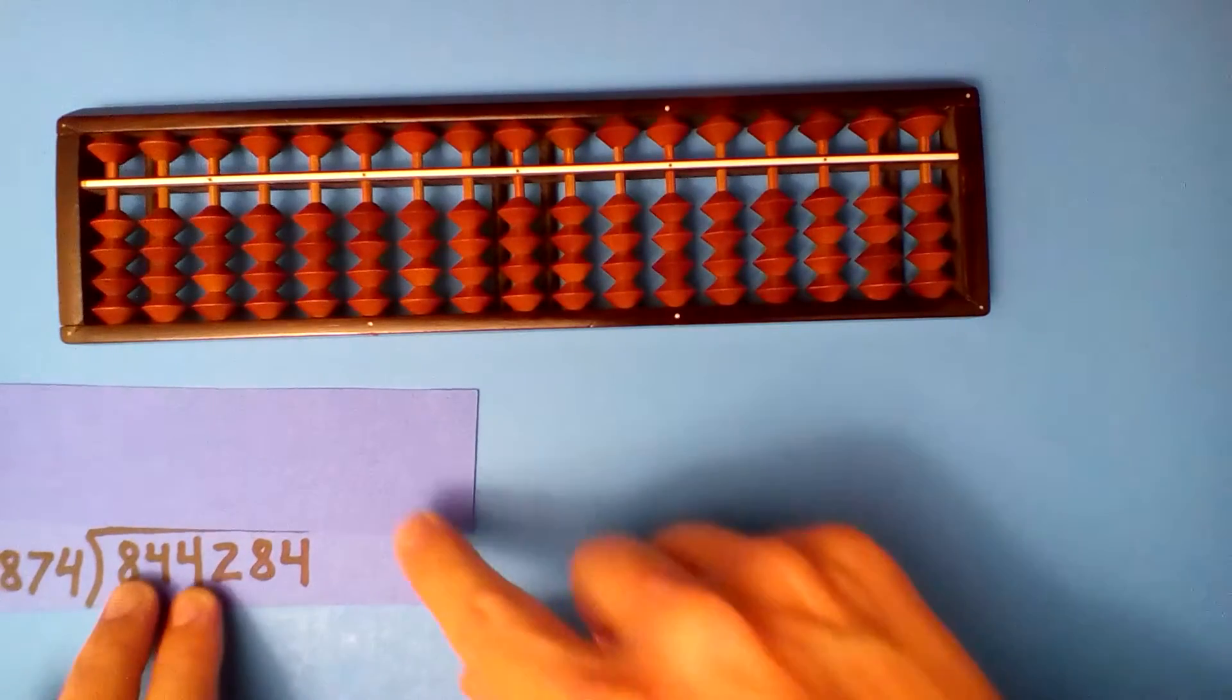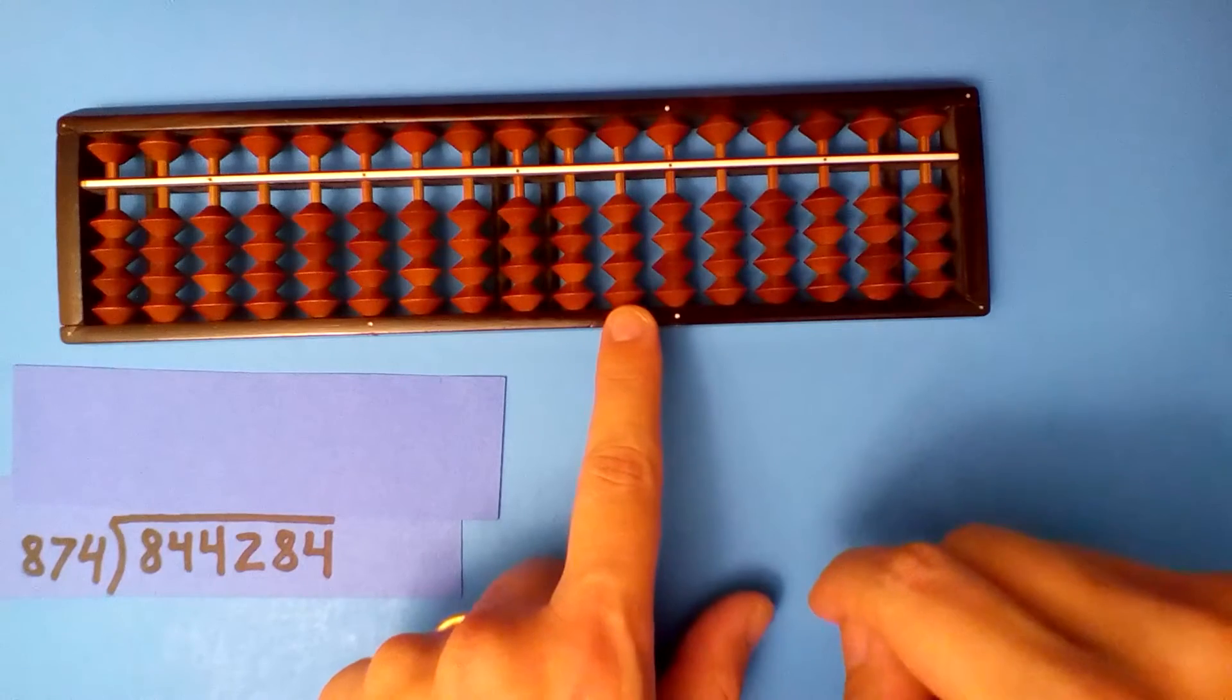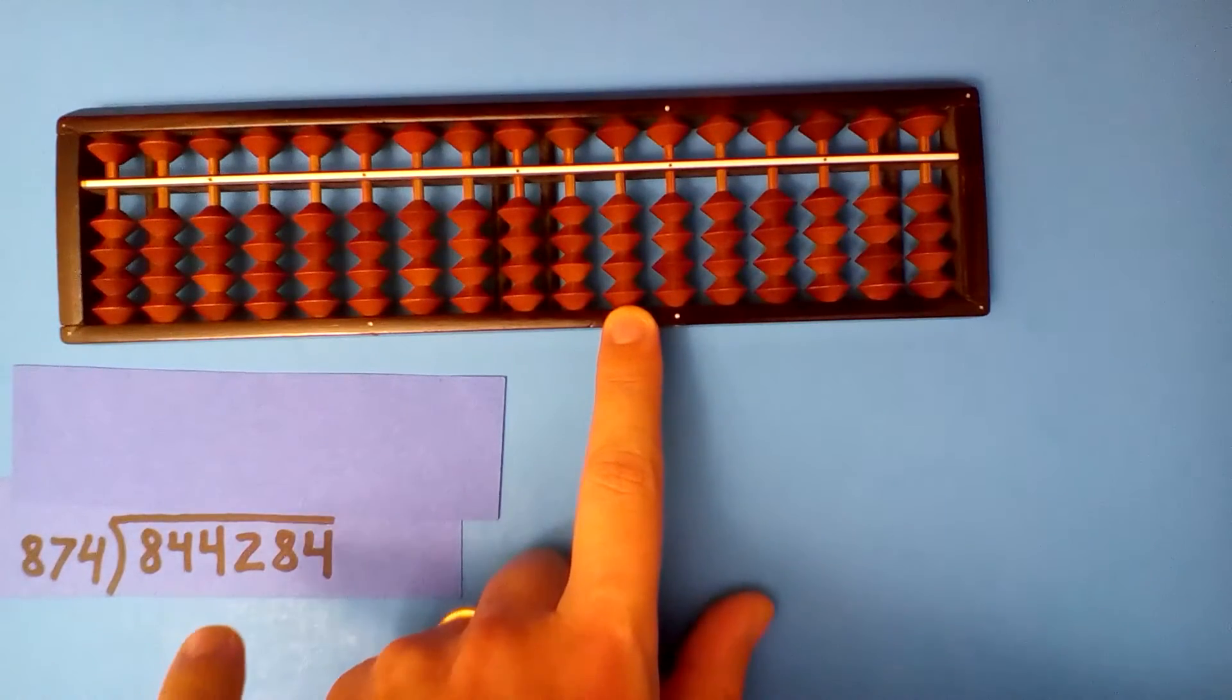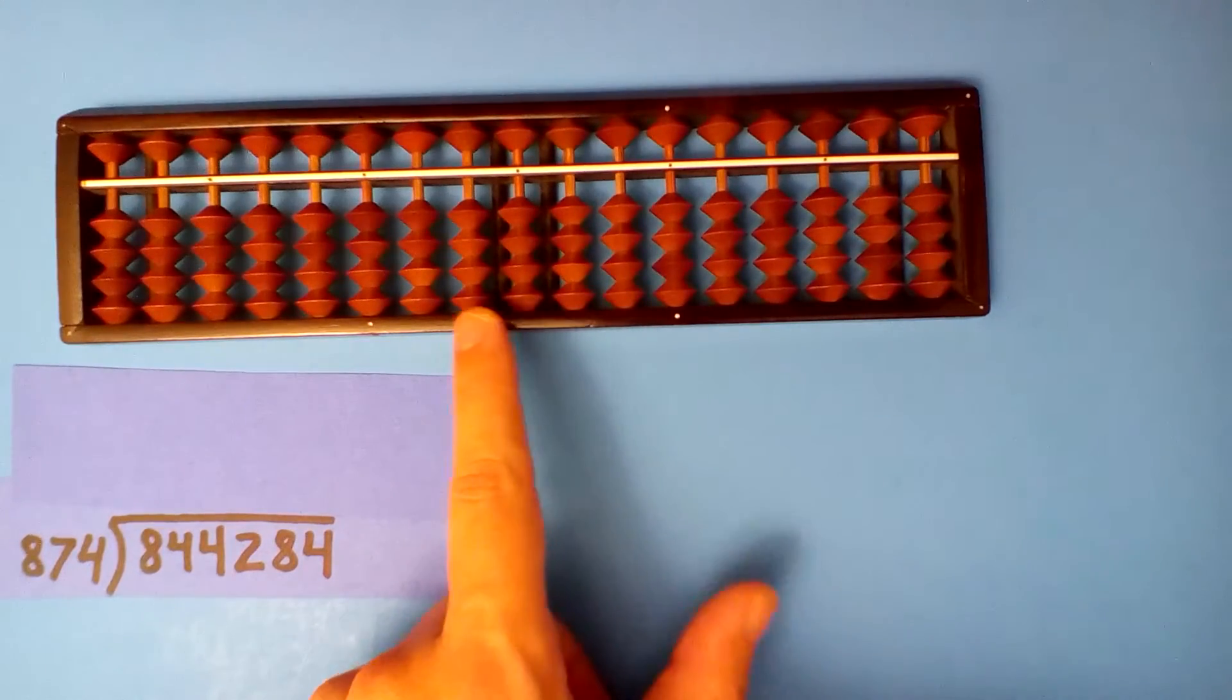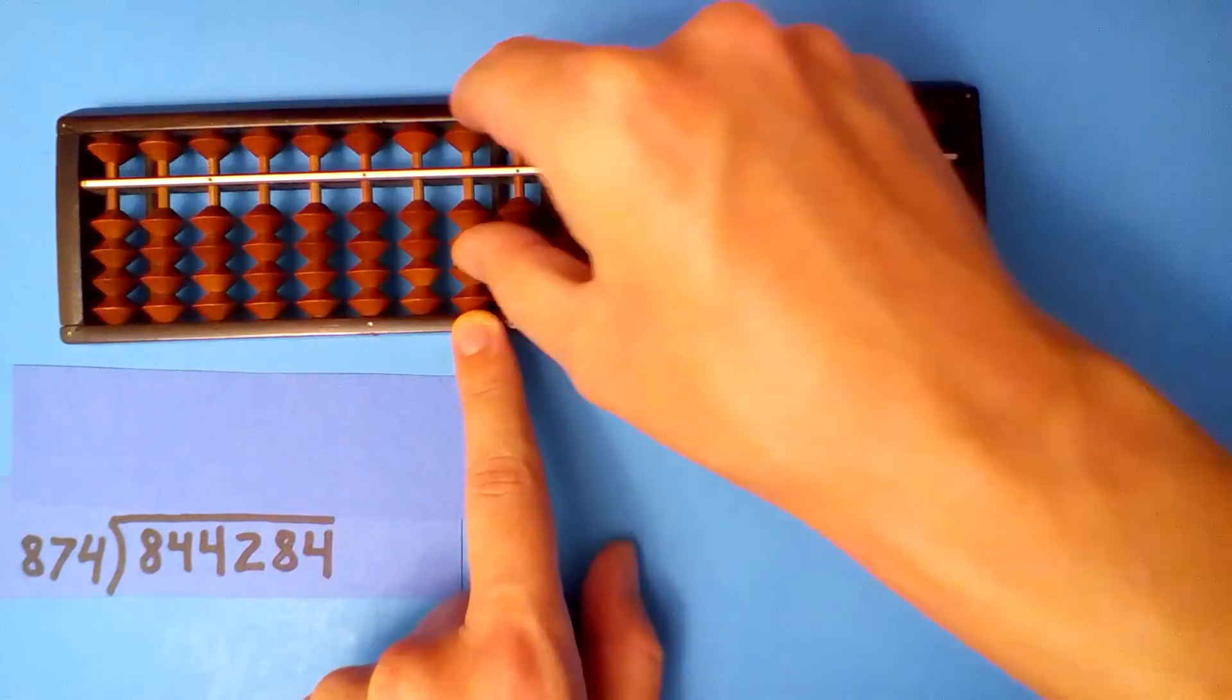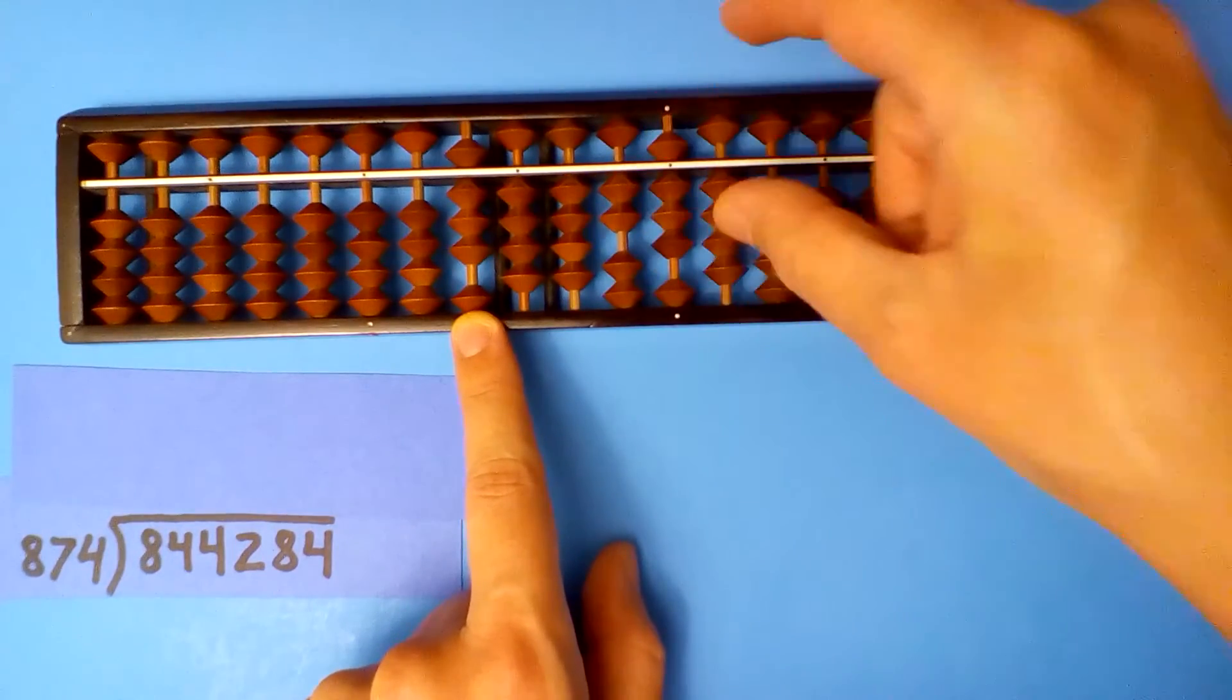844,284 divided by 87.4. Start on the hundreds. Six digits versus three digits. There's three more digits in the dividend: 1, 2, 3. I'll set up our dividend: 8, 4, 4, 2, 8, 4. And divide.